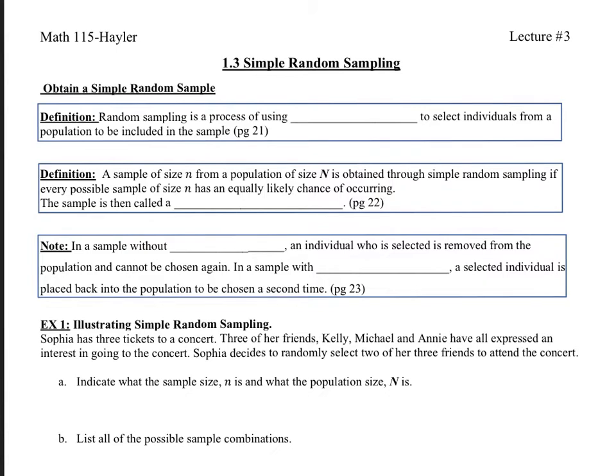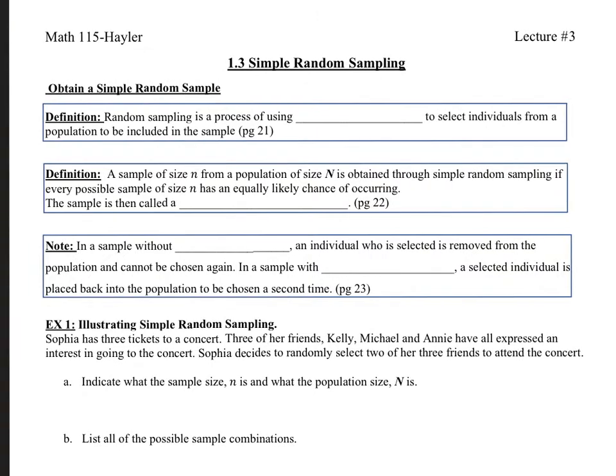Obtaining a simple random sample. For the definition, random sampling is a process of using chance to select individuals from a population to be included in the sample. And as usual, I include the page number where to find this piece of information.